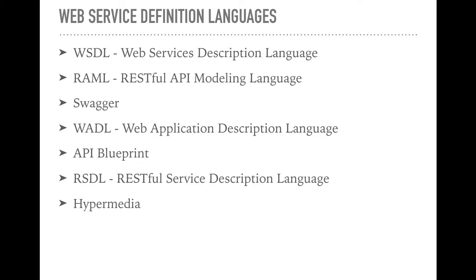Moving on to the next slide — a web service definition language is a set of rules for defining a web service. The most popular one is WSDL, which stands for Web Service Description Language, through which you can define SOAP-based or REST-compliant web services. We also have RAML — RESTful API Modeling Language — a description language built by the MuleSoft team. Additionally, there is SWAGGER, WADL (Web Application Description Language), API Blueprint, and RSDL (RESTful Service Description Language), as well as Hypermedia.